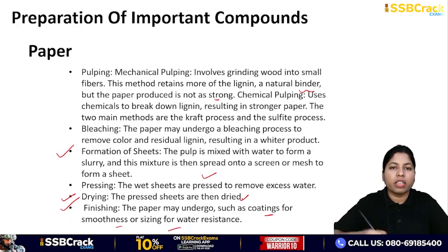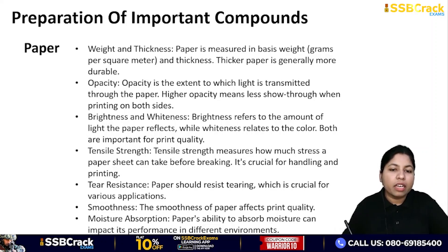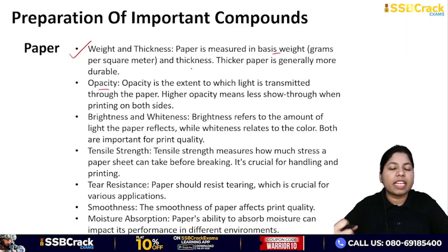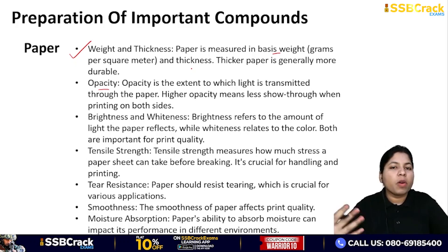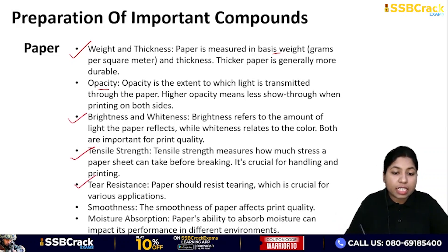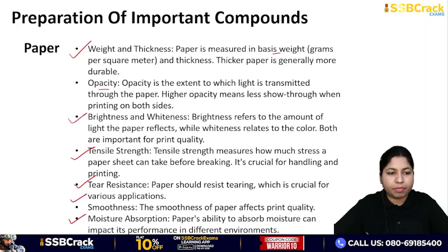After drying, the paper may undergo finishing processes such as coatings for smoothness or sizing for water resistance. Key properties of paper include: weight and thickness measured in basis weight, opacity (how much light passes through), brightness and whiteness, tensile strength, tear resistance, smoothness, and moisture absorption.